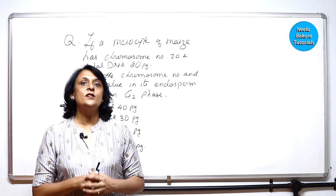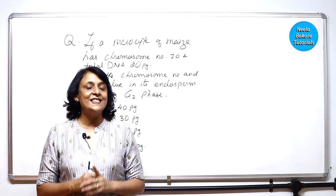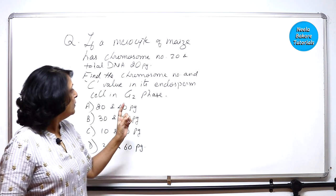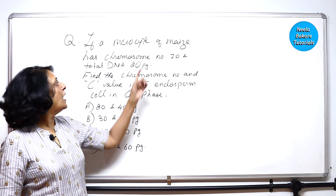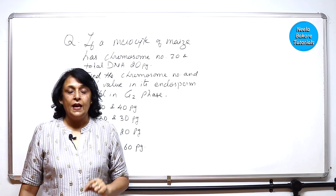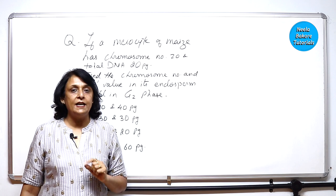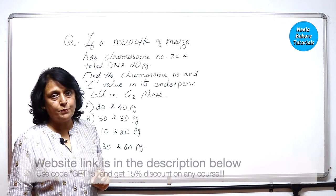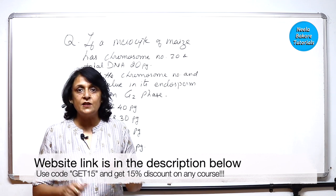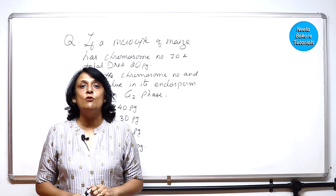Hello everyone, this question is based on cell cycle and the C-value concept. Now the question is about meiocyte of maize. If you have read NCERT carefully, then in the first chapter of class 12, that is reproduction in organisms, there is one table which is talking about meiocytes.